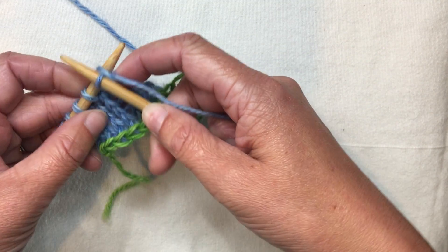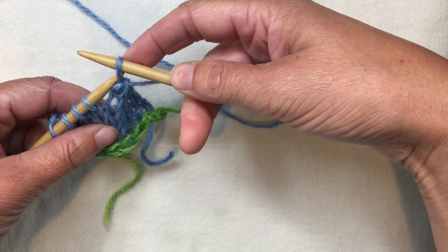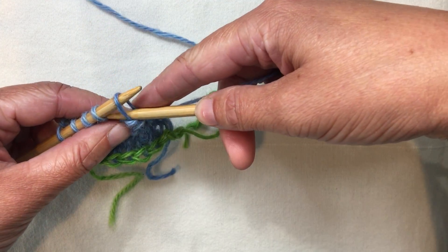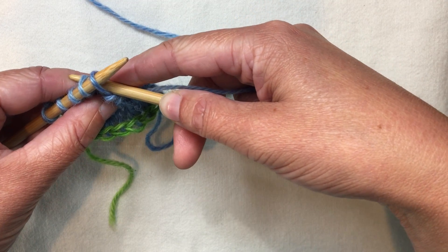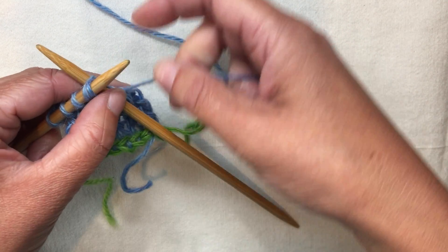Now there's a variation on this that when you return the stitch to the other needle you knit through the back of the loop and you can do that without taking your needle out so it's a little bit faster.